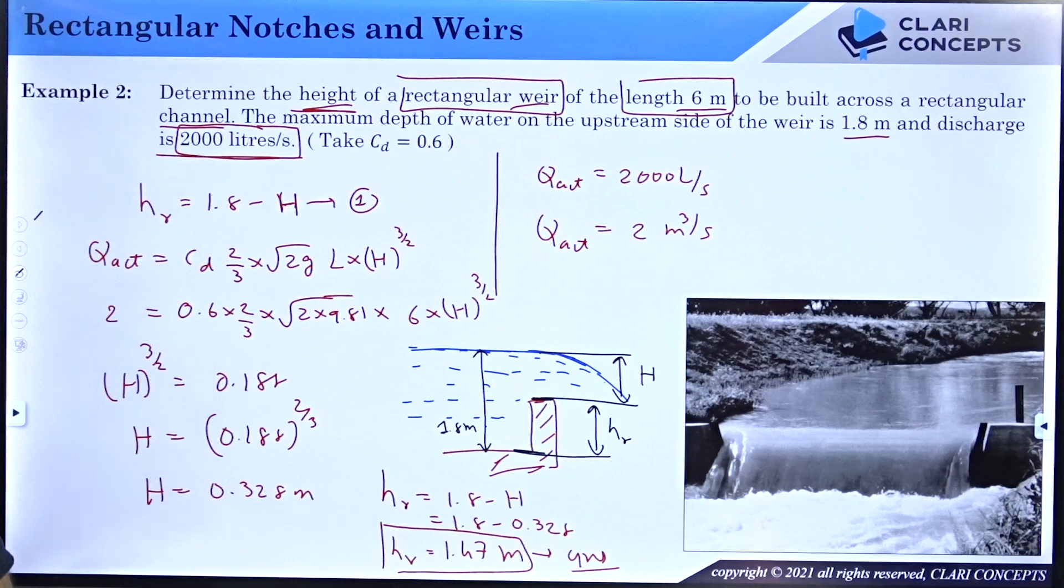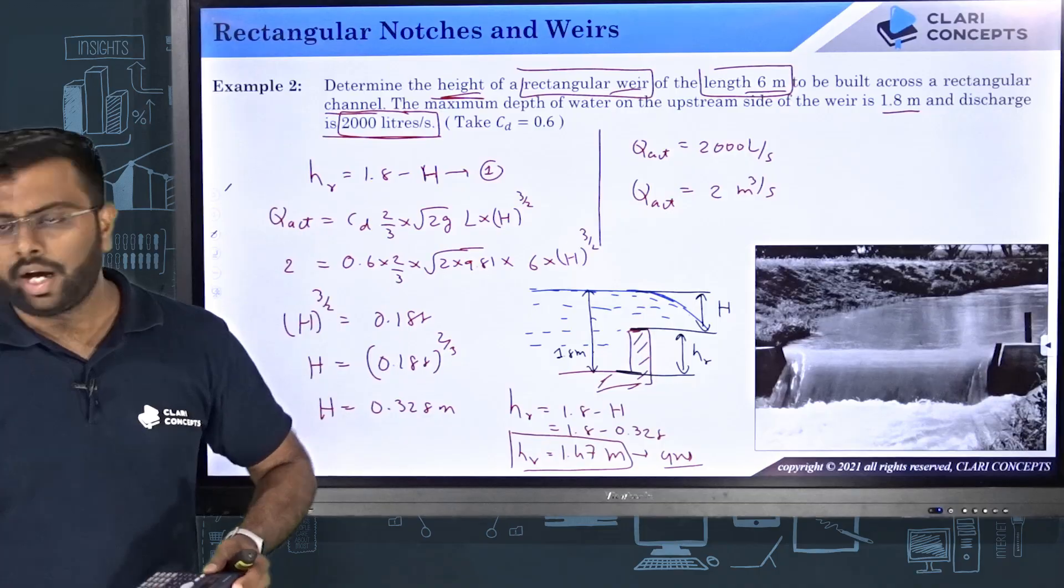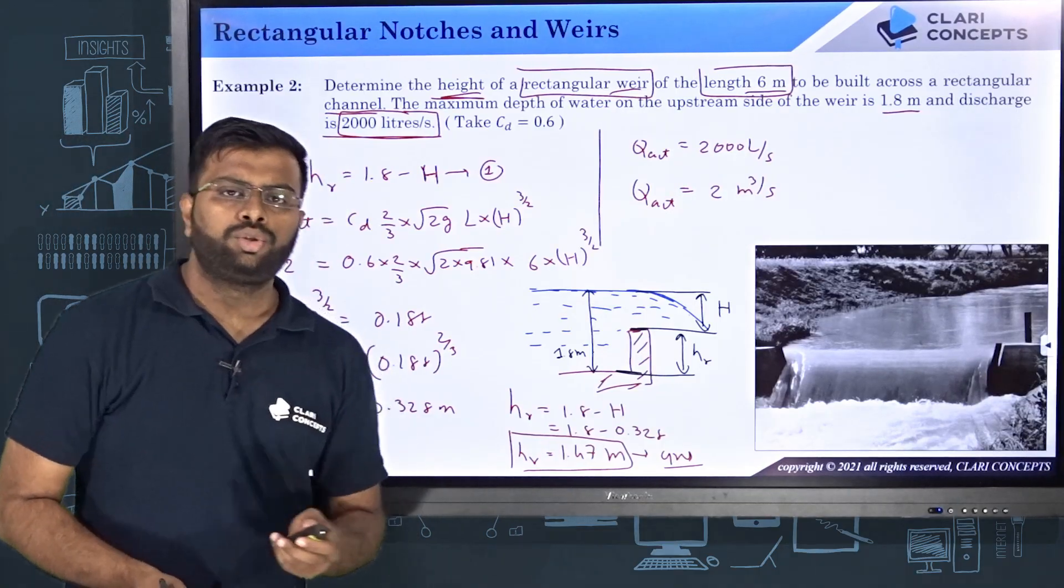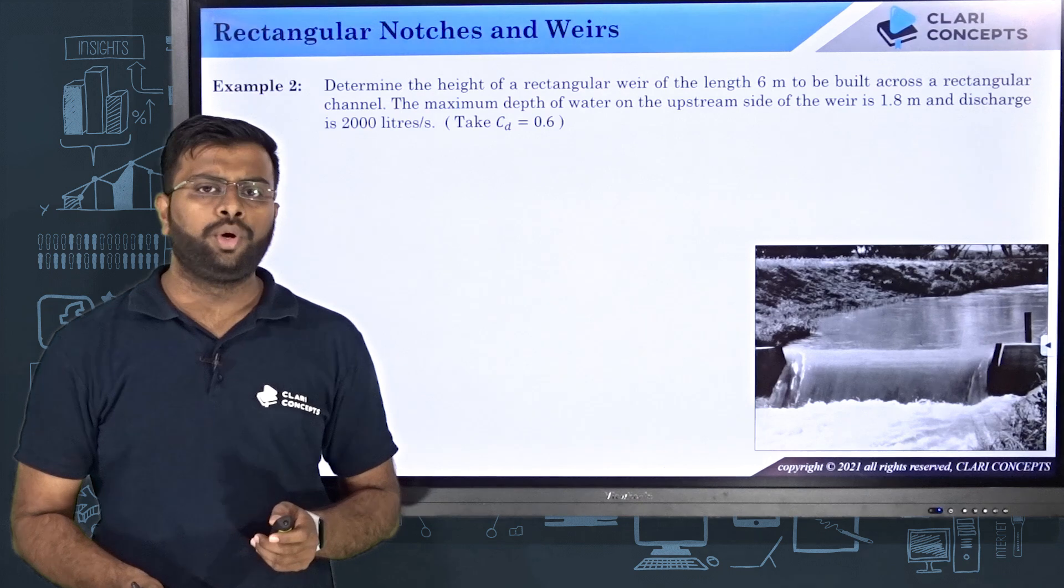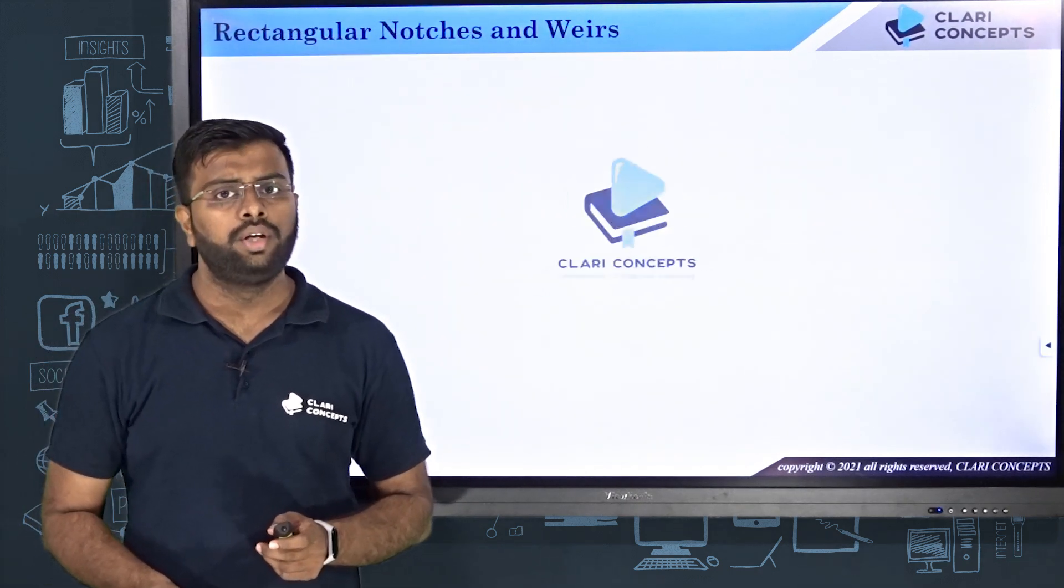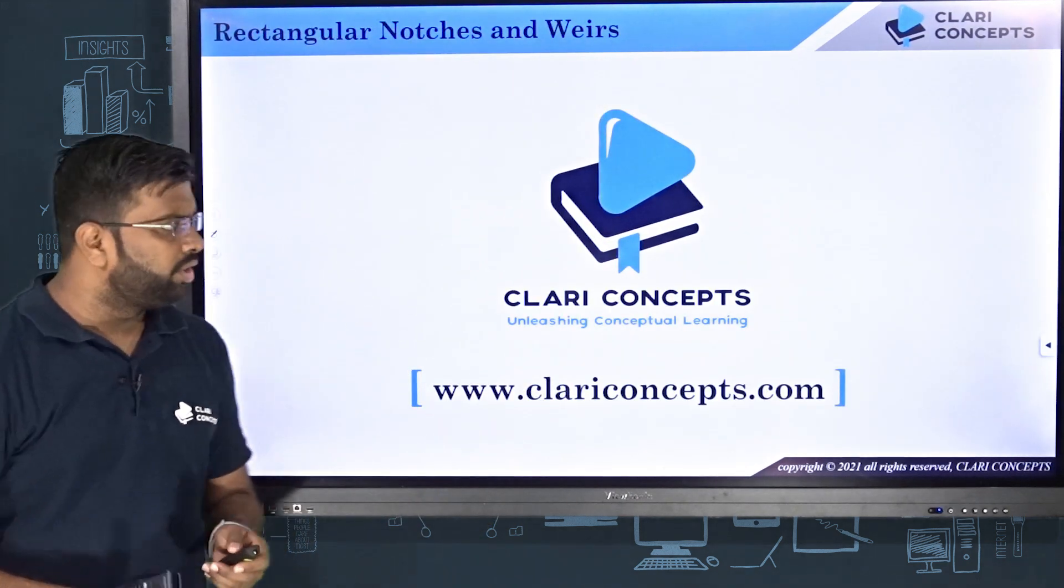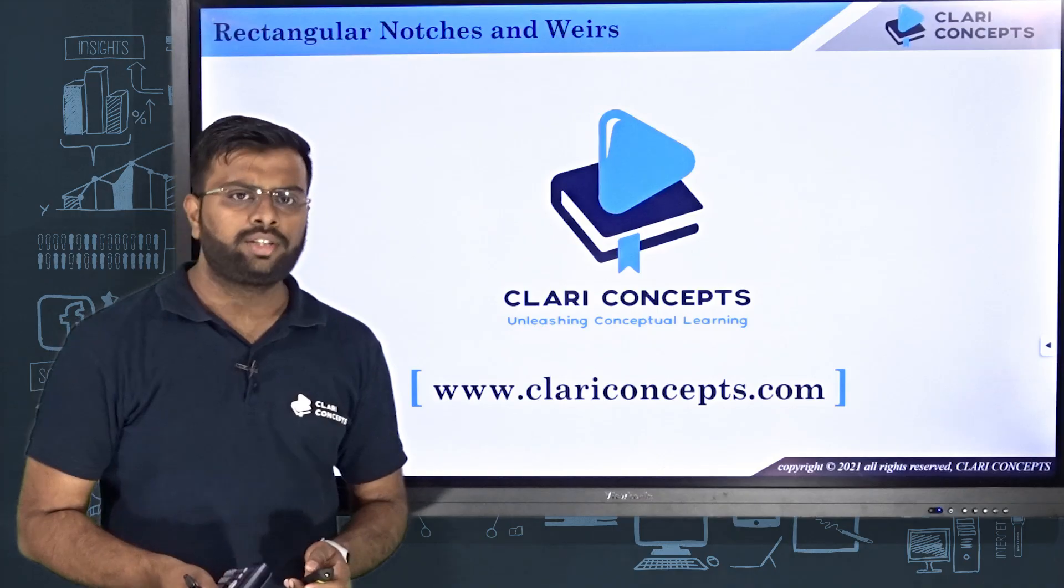Clear? Let me check the answer. Yes, the height is correct. So the height is 1.47 meter. So that's it for the numerical. I hope you understood how to solve the numericals of rectangular notches and weirs. Thank you so much. See you in the next class.